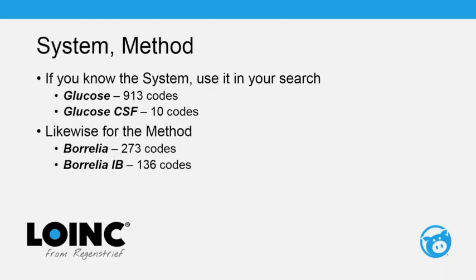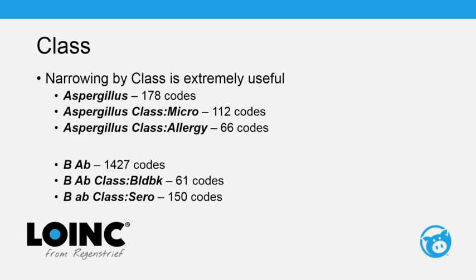For system and method, if you know them, include them in the search. Searching 'glucose' returns 913 codes, but 'glucose CSF' returns only 10 codes. For method, searching 'Borrelia' returns 273 codes, but 'Borrelia IB' (immune blot) returns 136 — still quite a few, but you can use other strategies to narrow further.